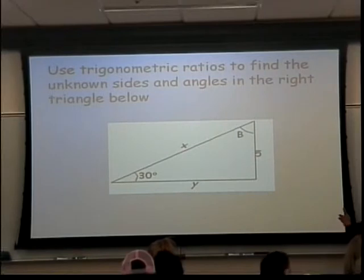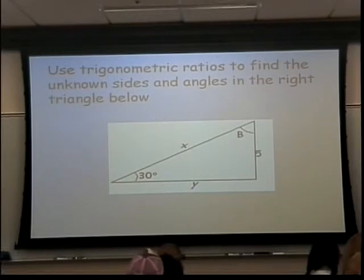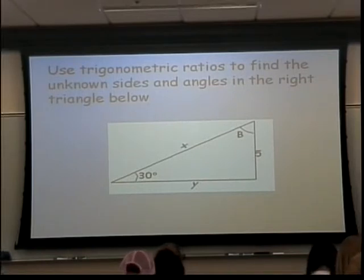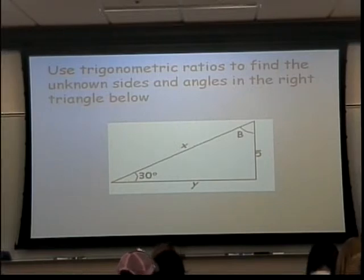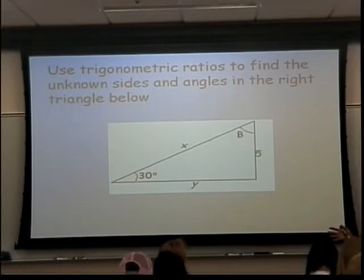The first thing we need to do is figure out what B, X, and Y are. Let's start with B. This is a right triangle. If I want to add up the measures of all the angles in this triangle, what will I get? 180. What if it were bigger? 180. What if it were a tiny little triangle? 180. The angles in a triangle add up to 180 no matter what size the triangle is.